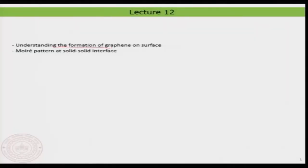Hello everyone, welcome back. In today's lecture I am going to discuss first a little bit on what we have been discussing in the previous class. In the previous class we looked at the formation of graphene using chemical vapor deposition. I will give you a few more details about the graphene formation itself and a few important parameters to keep in mind, and then we will come back to the moiré pattern at solid interfaces.